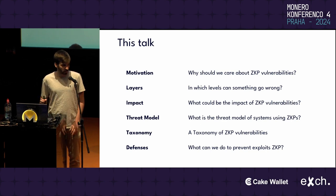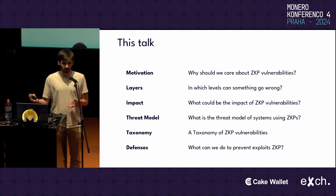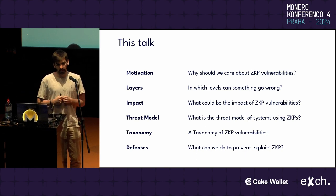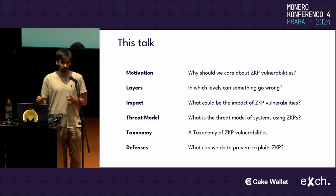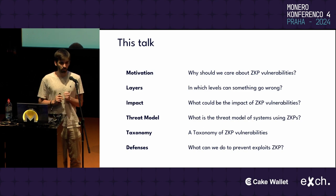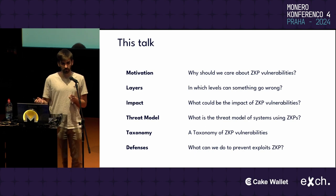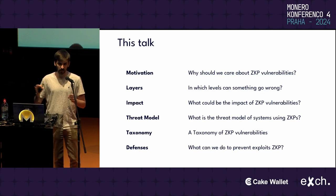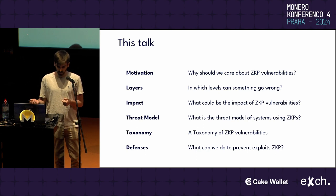In this talk I'm going to present our latest work on zero-knowledge proof vulnerabilities. I will give a brief motivation, then discuss our mental model for systems using zero-knowledge proofs, then discuss the impact of those vulnerabilities, present the threat model, and then present the main body of our work which is a taxonomy for vulnerabilities in zero-knowledge proofs.